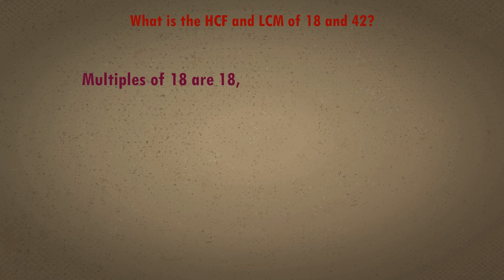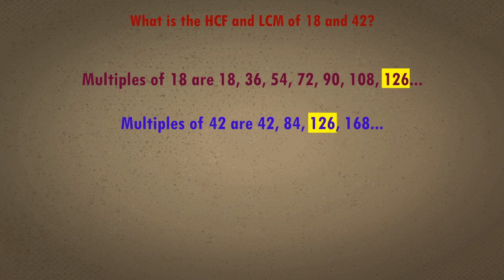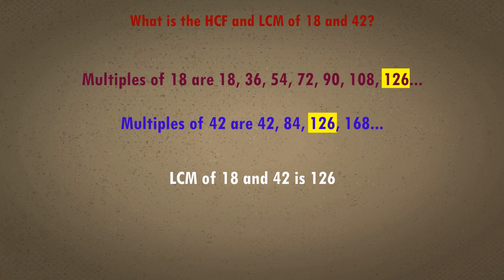Multiples of 18 are 18, 36, 54, 72, 90, 108, 126, and so on. Multiples of 42 are 42, 84, 126, 168, and so on. We can clearly see that 126 is the least common multiple of 18 and 42.